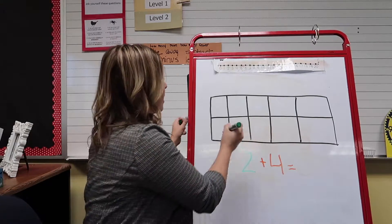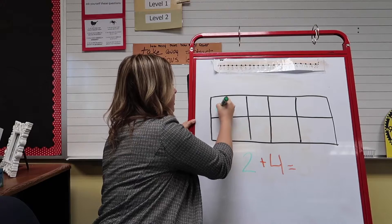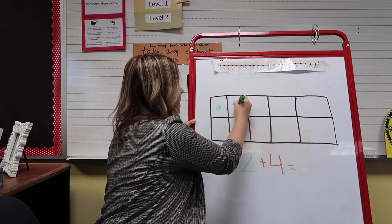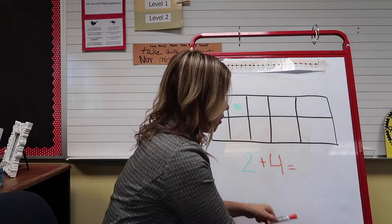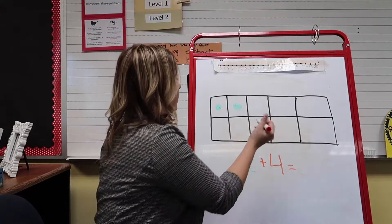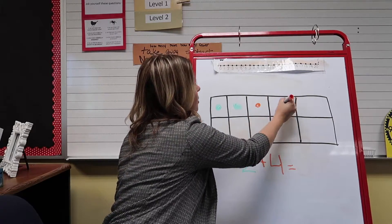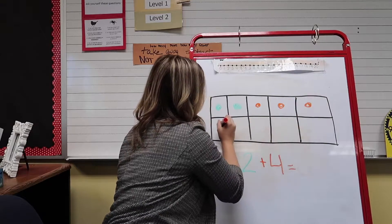So with green, I'm gonna color in 2 boxes. So that's 2 plus 4. So I'm gonna use orange to color in 4. 1, 2, 3, 4.